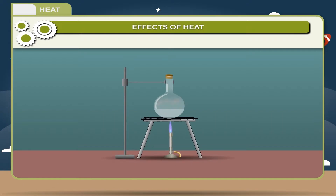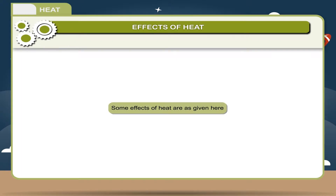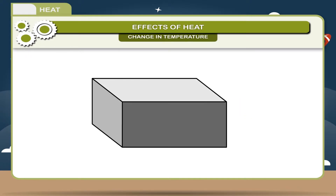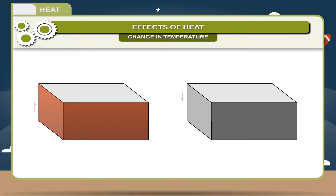Effects of heat: when an object is heated it undergoes many changes. Some of the effects can be felt and some cannot. Change in temperature: when a body is heated its temperature rises, which depends upon the amount of heat received by the body from the source. When a body is cooled it loses heat energy and its temperature falls. We can say that if heat is the cause, temperature is the effect.